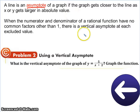When the numerator and denominator of a rational function have no common factors other than 1, there is a vertical asymptote at each excluded value. So, the vertical asymptote would be the excluded value. In this case, it's going to be negative 2.